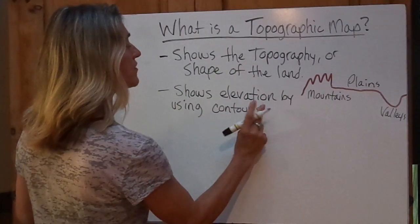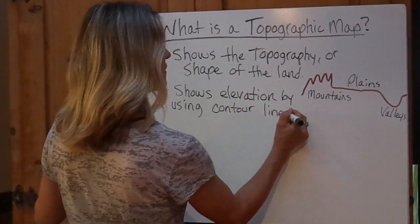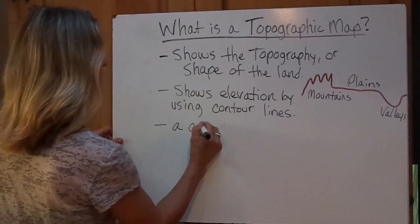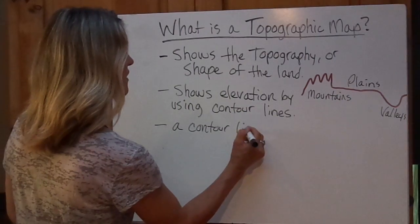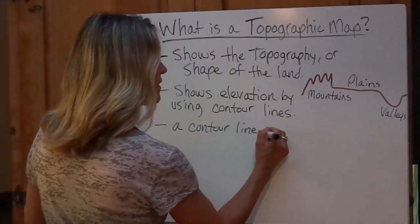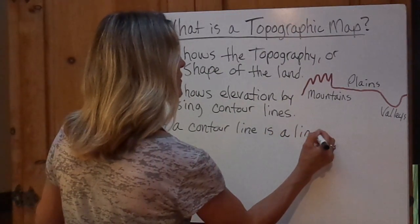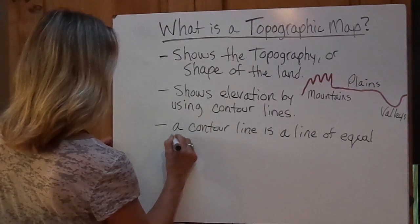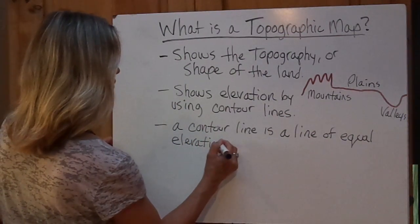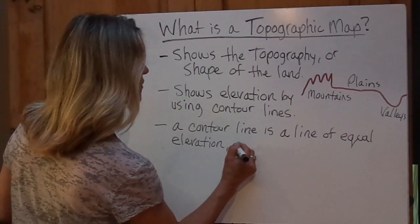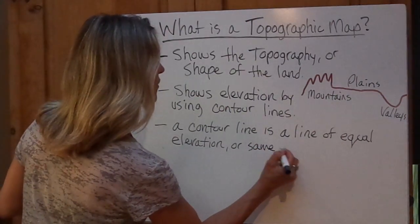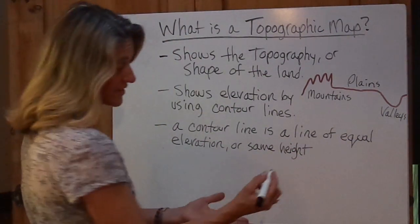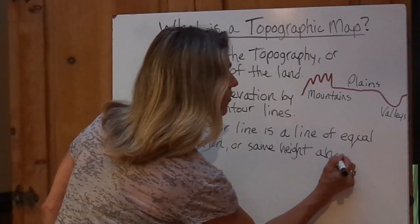It looks like a whole bunch of squiggly lines all over the map. What is a contour line? A contour line is a line of equal elevation — same height above sea level. Sea level is the zero elevation.